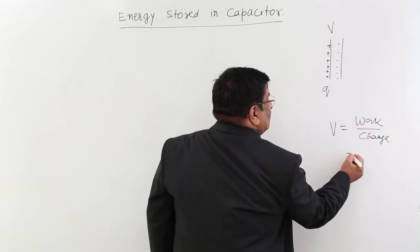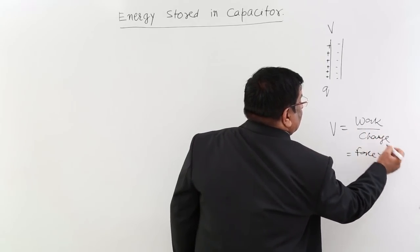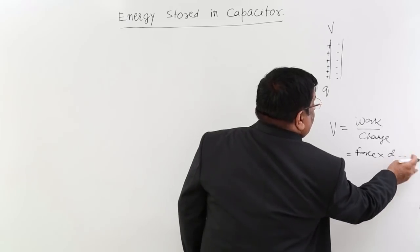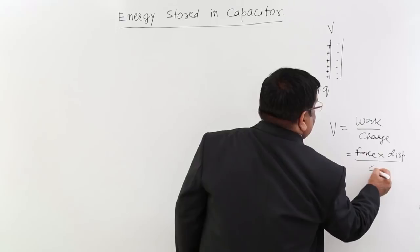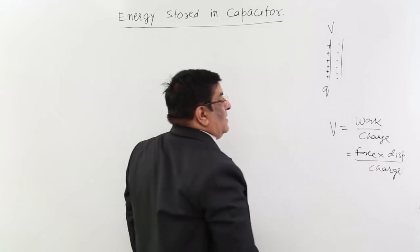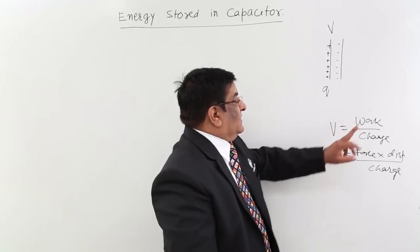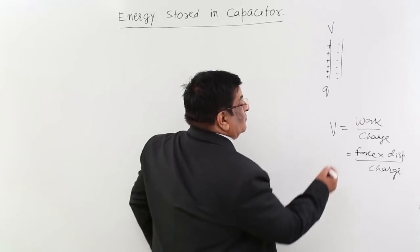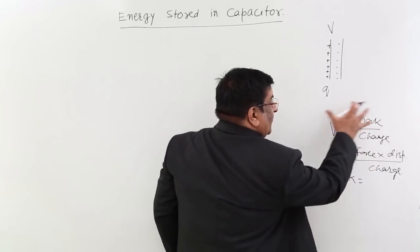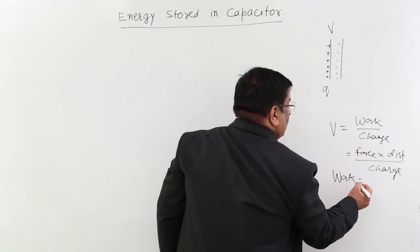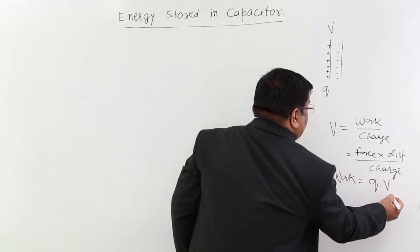And this work is what? Force into displacement upon charge. So this is potential related to work. So work is equal to what? Potential into charge. These are the different formulas from mechanics we all know. So here, work W is equal to Q into V.